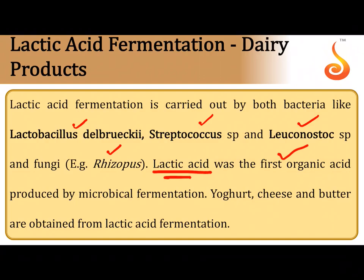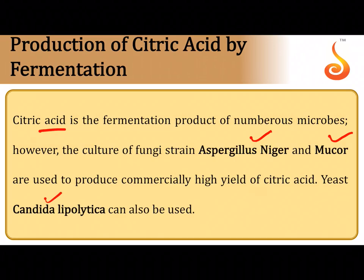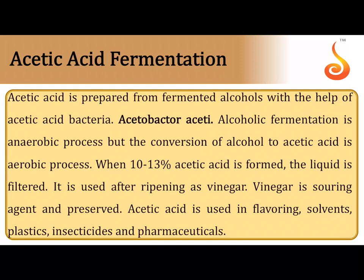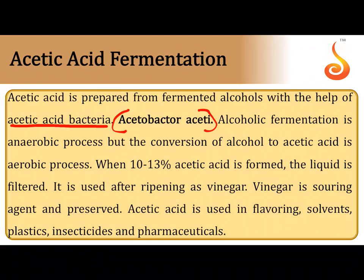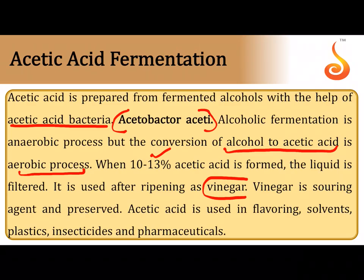Citric acid-producing microorganisms include Aspergillus niger, Mucor, and yeast species like Candida lipolytica, used for commercial production of citric acid. Acetic acid is prepared from fermented alcohol with acetic acid bacteria, specifically Acetobacter aceti. This conversion of alcohol to acetic acid is an aerobic process yielding about 10–13% acetic acid, and after ripening, the product is used as vinegar.